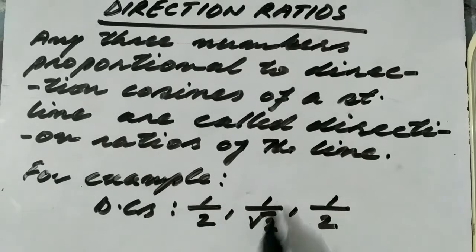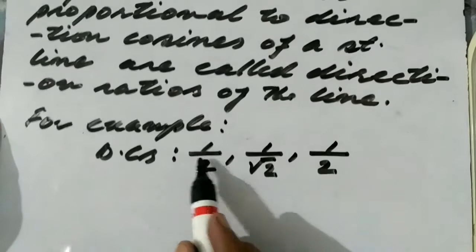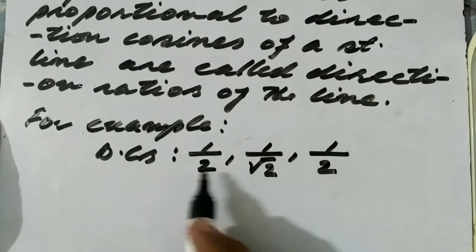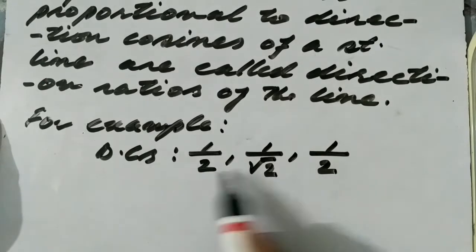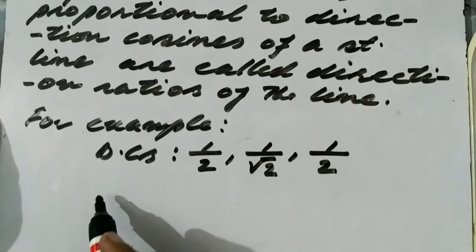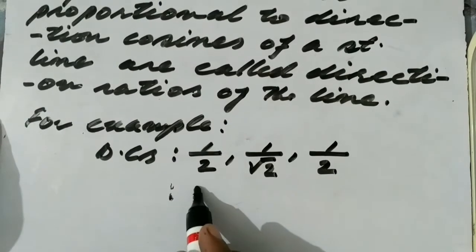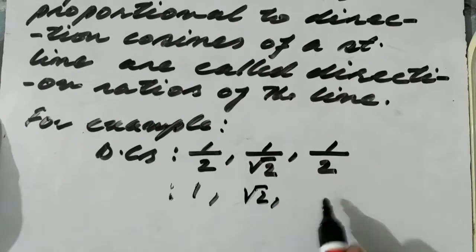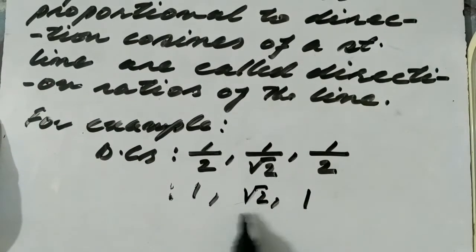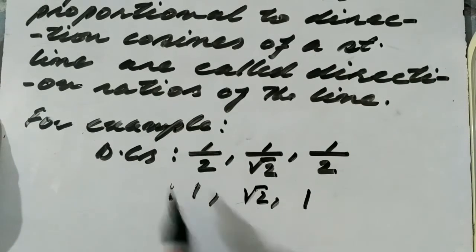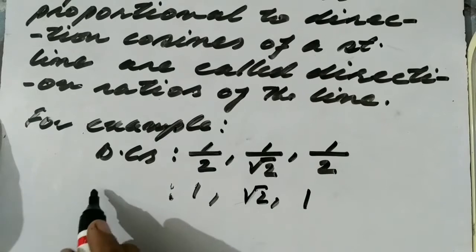Suppose the direction cosines of a line are 1/2, 1/√2, and 1/2. We may multiply these three direction cosines by any number, and the resulting numbers must have the same proportion. Suppose we multiply by 2 — we get 1, √2, and 1. These are direction ratios.